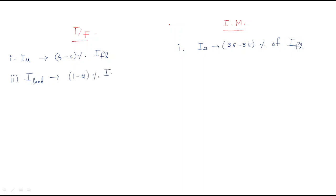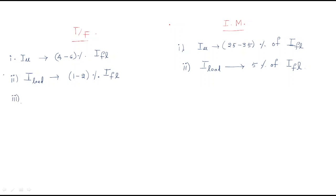For the transformer, the load current is 1 to 2% of the full load current — very less load current. For the induction motor, the load current is 5% of the full load current. The magnetizing current is approximately 3 to 4 times the load current in the transformer.